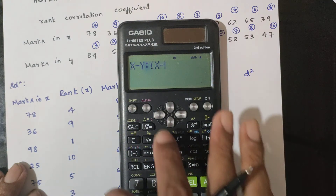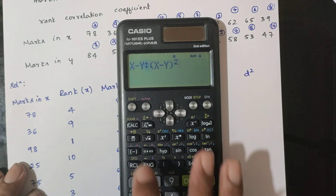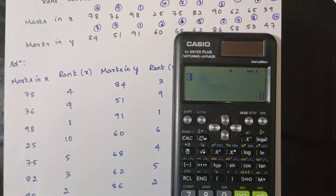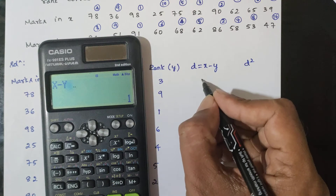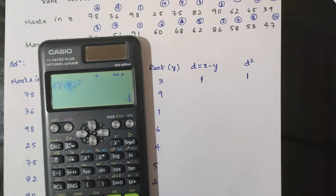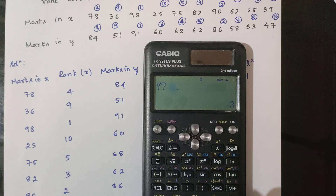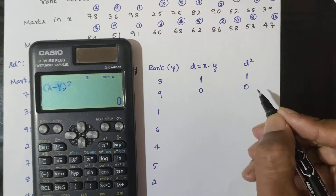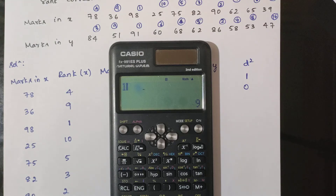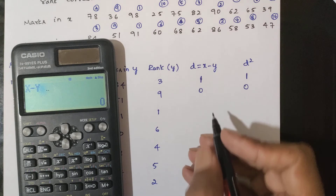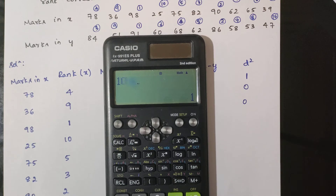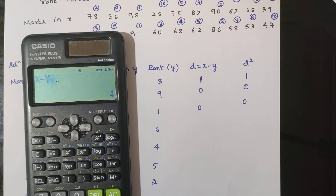Now we calculate d = (rank in X minus rank in Y), and then d squared. Here X rank is 4 and Y rank is 3, so d is 1. Next X rank is 9 and Y rank is 9, so d is 0. Next X rank is 10 and Y rank is 10, so d is 0. Next X rank is 5 and Y rank is 4, d is 1, d squared is 1; giving 16.